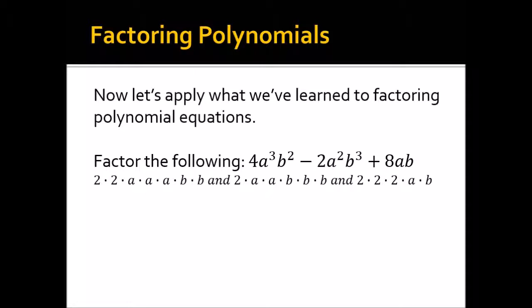So now, take a look at this. What do you think is the terms that they all share? So they definitely share a 2. Not more than 1 two because that middle term only has a single 2. That means we can only pick 1 two. And then they also share an a and then they also share a b. So it looks like our GCF then is 2ab.